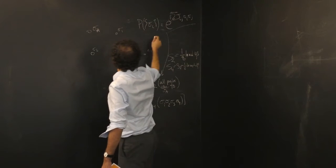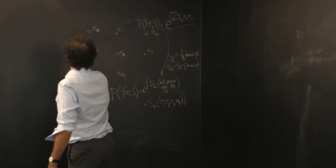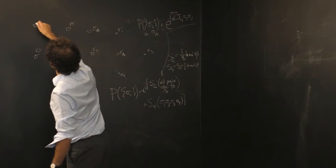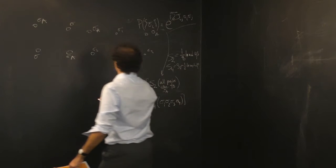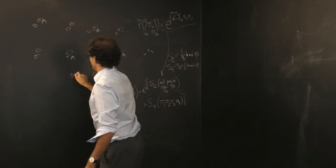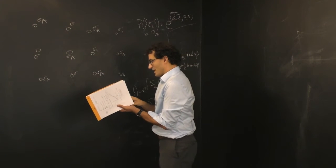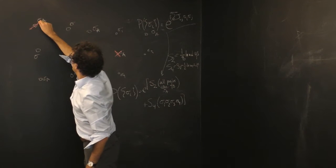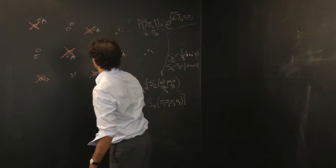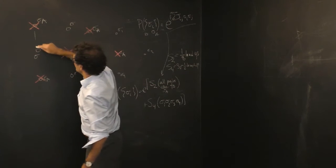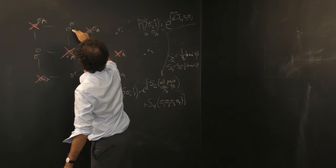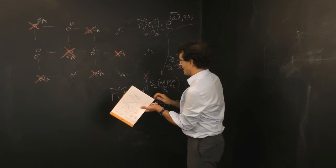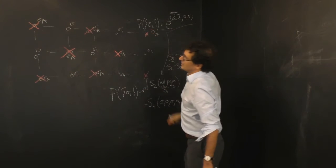Up here is going to be another sigma_a, over here another sigma_a, over here another sigma_a. This one here is a sigma I'm going to keep. Here is another sigma_a. Up here is a sigma_a, down here is a sigma_a I'll trace, here is a sigma I'll keep, here is a sigma_a I'm going to trace. So you can see that what used to be this nice connected lattice is now missing — it has a lot of gaps.